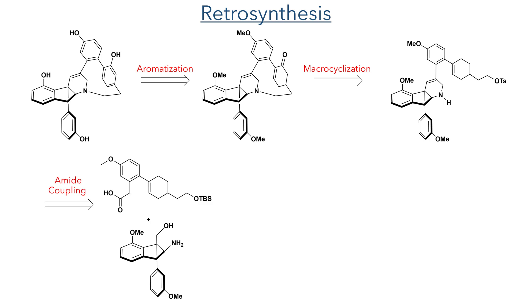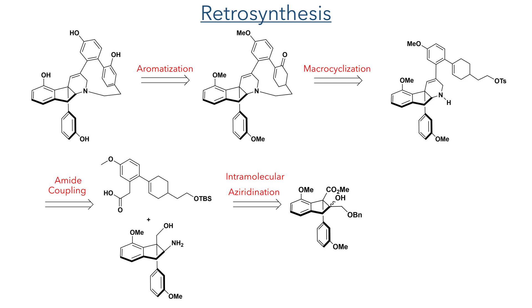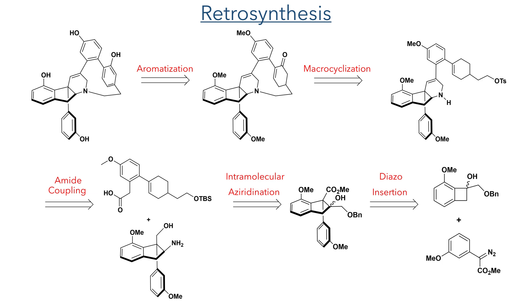Disconnecting this macrocyclisation precursor back, we get two fragments: a carboxylic acid and an amino alcohol fragment. The amine group on this fragment could be installed using an intramolecular aziridination reaction. This fragment would be derived from a diazo insertion reaction into the benzocyclobutanol compound shown in the slide.